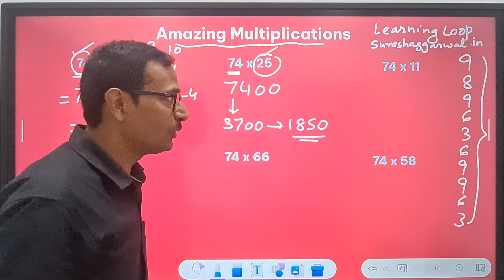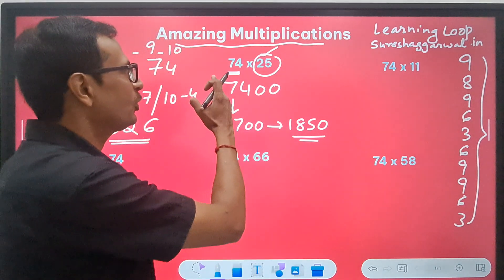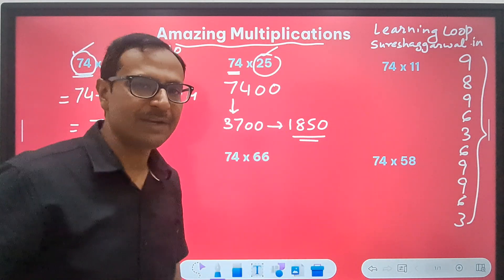Pick up the calculator, friends, and you will be really amazed how we are getting the correct answer every time. 74 times 25 is exactly 1850.